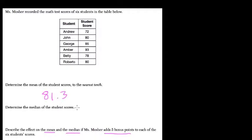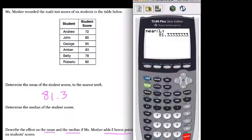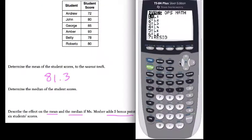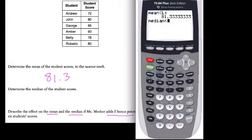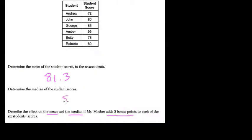So 81.3. The median you can quickly find that as well. Second, stat, math, choice four is the median. Hit four, second, stat again, L1. You can also hit second one for list one. Press enter, we get 80.